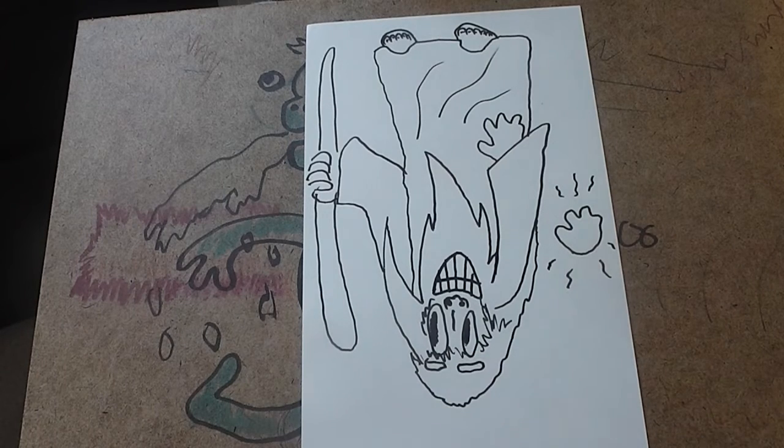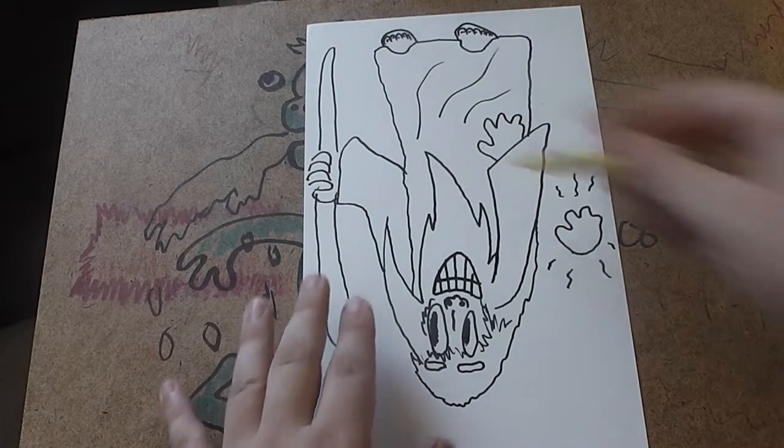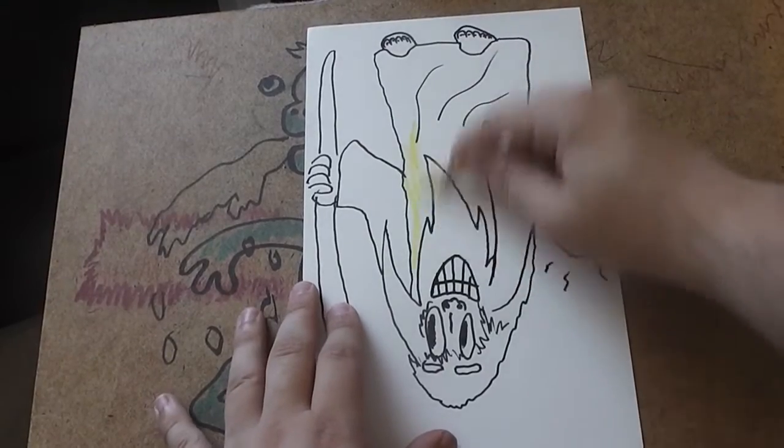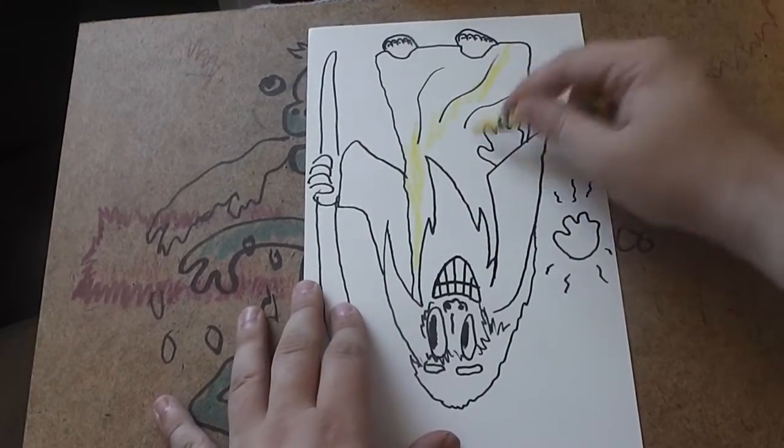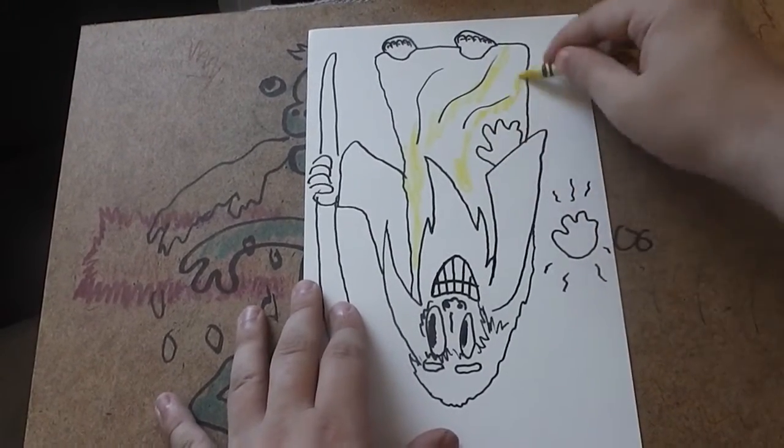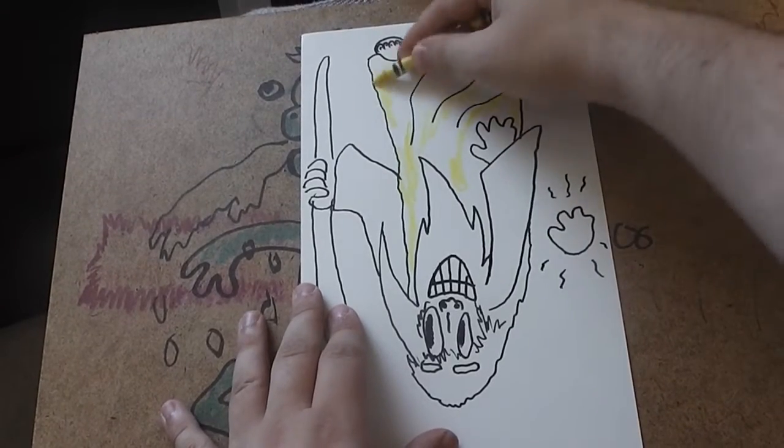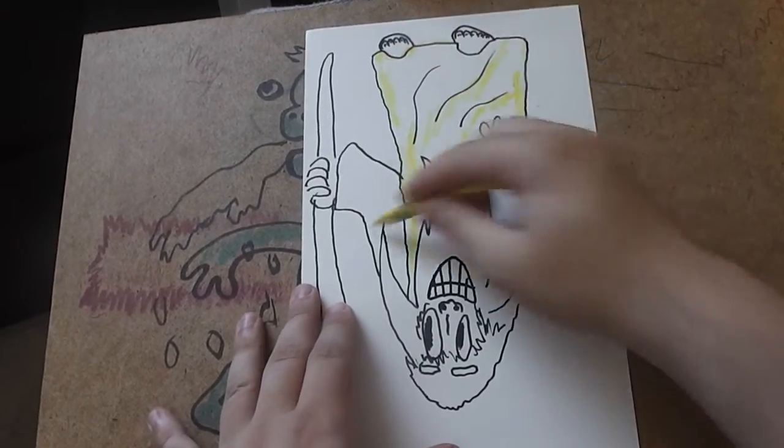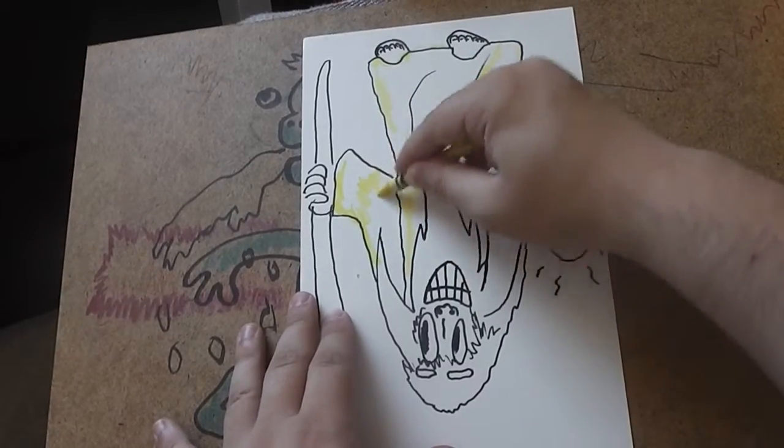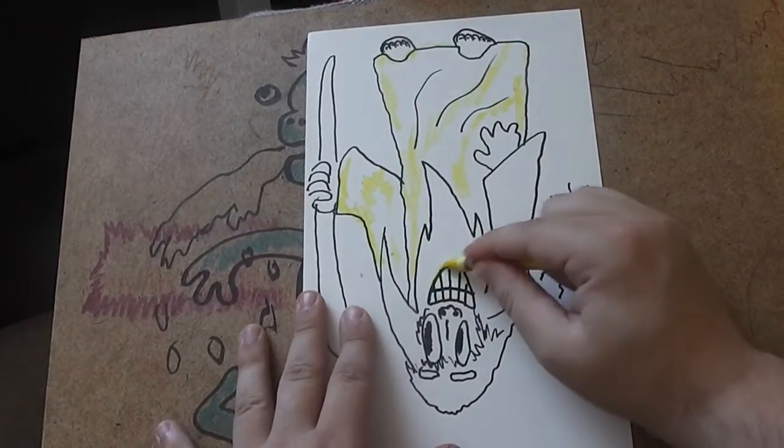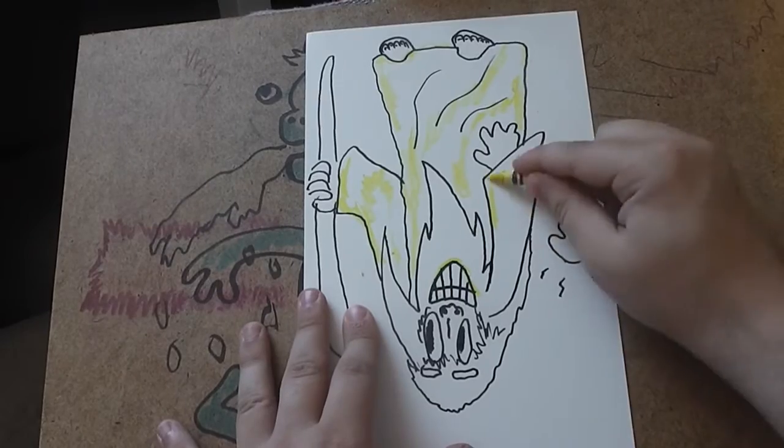Okay, now some colour. As I said, this is Gandalf the Grey. So the most important colour is obviously yellow. To pick up all those highlights. Like so. And around here. And around here. And here.